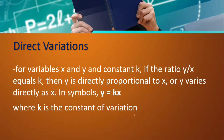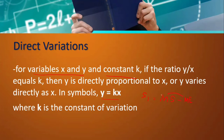For variables x and y and constant k: if the ratio y/x equals k, then y is directly proportional to x, or y varies directly as x. In symbols, y = kx. So from this, we have step number one — translate from mathematical sentence to mathematical equation: y varies directly as x means y = kx.